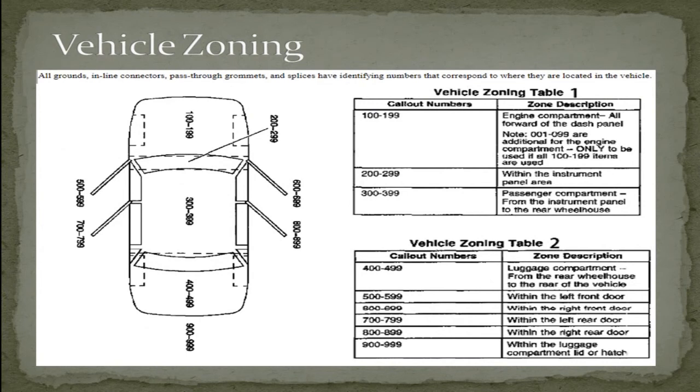And that leads us to the vehicle zoning. Remember earlier in this chapter I asked you to try to remember that P100 on that pass-through grommet. Well, here's why. All grounds, inline connections, pass-through grommets, and splices have identifying numbers that correspond to where they are located in the vehicle. As you can see, 100-199 is the engine compartment.